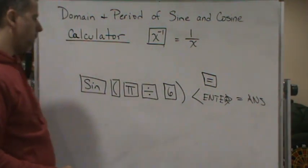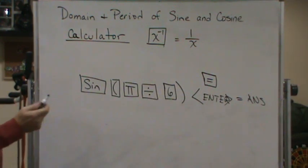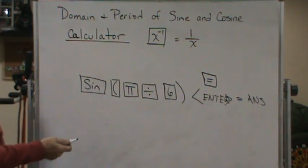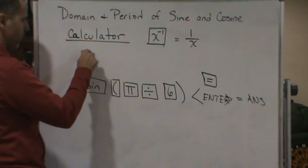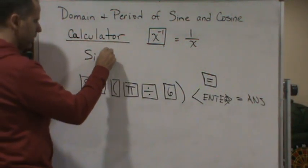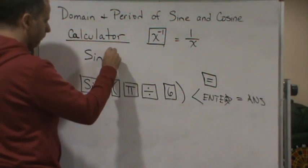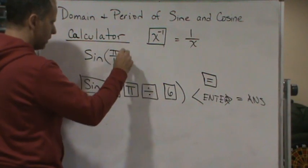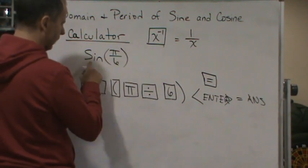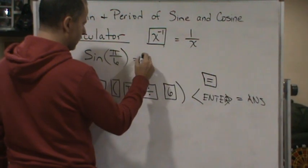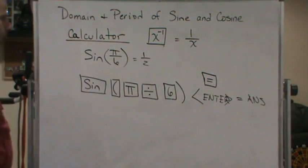And then hit enter, and you should get 0.5. Because we know from the unit circle, sine of pi over 6, this is equal to the y key, so this is equal to 1 half. You should get the same answer.